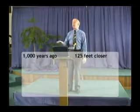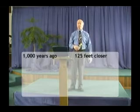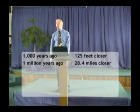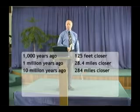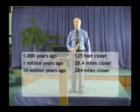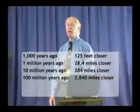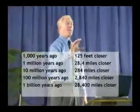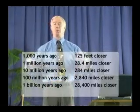If we go back about a thousand years, the Moon would be about 125 feet closer to us — insignificant as far as any tidal actions. Going back a million years puts the Moon about 28.4 miles closer to the Earth — again insignificant. Going back about 10 million years puts the Moon about 284 miles closer. Going back 100 million years, the Moon is about 2,840 miles closer to the Earth — maybe some significance there, not much. But if we go back a billion years, that puts the Moon about 28,400 miles closer to the Earth, and we might have some significance in the tidal actions.